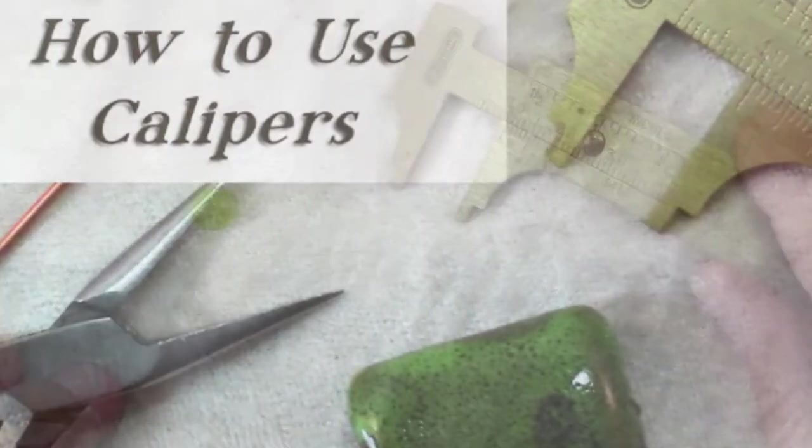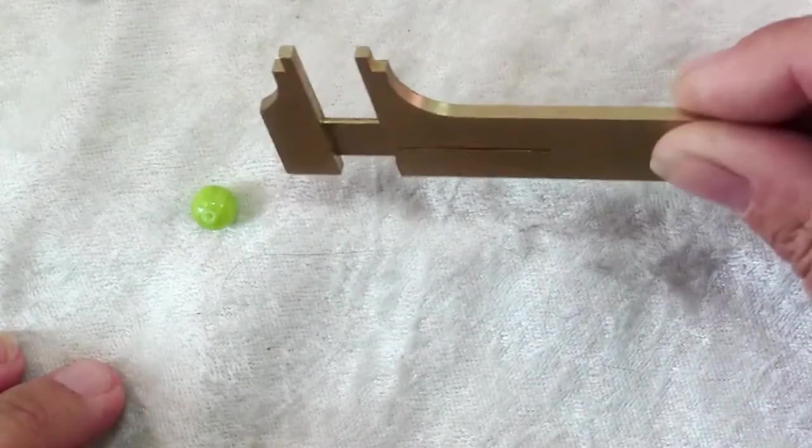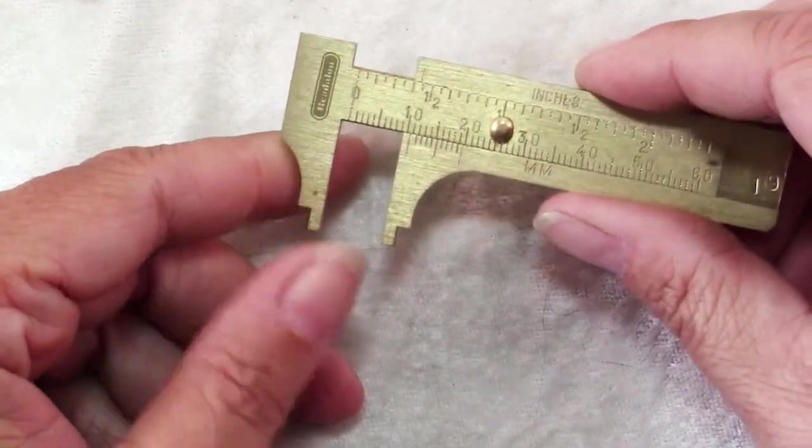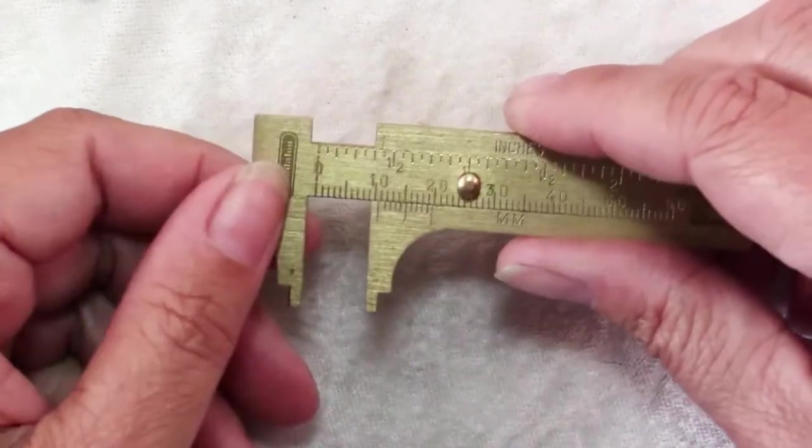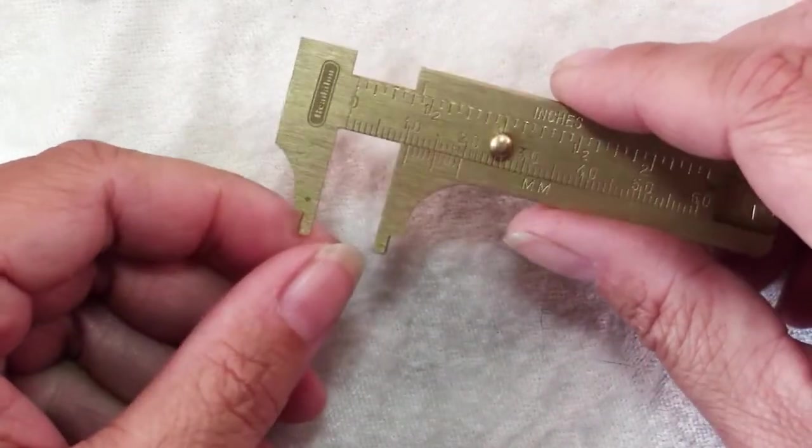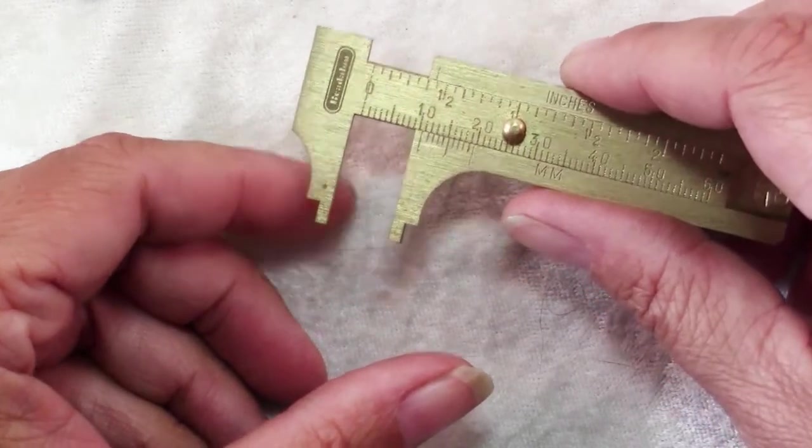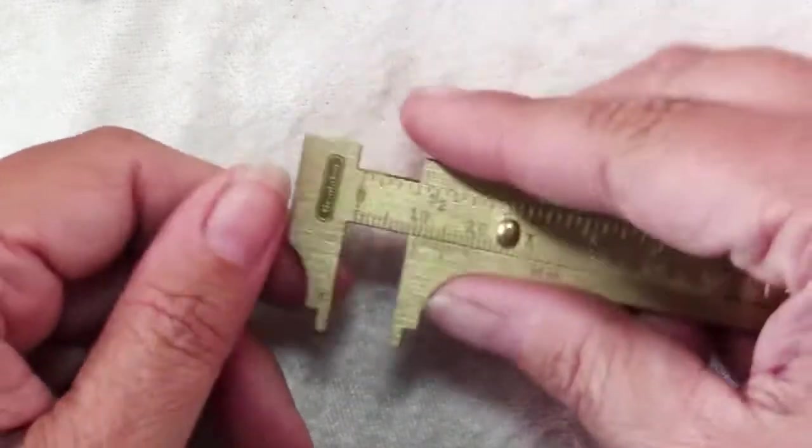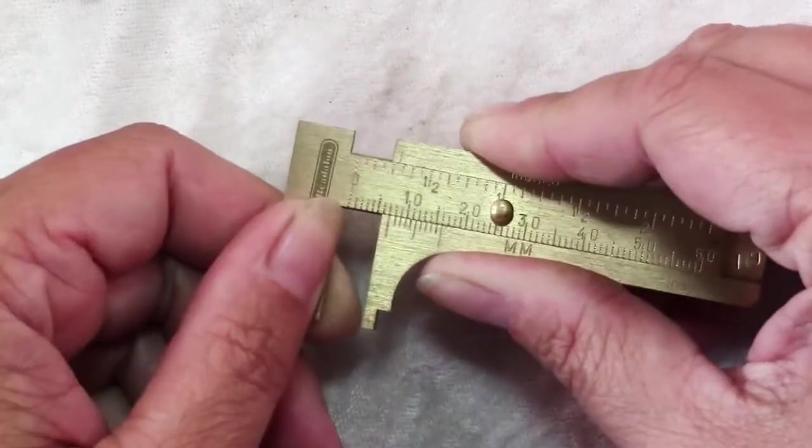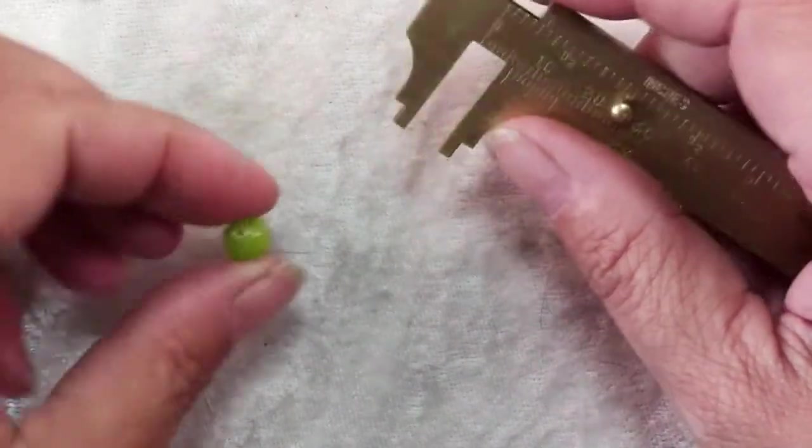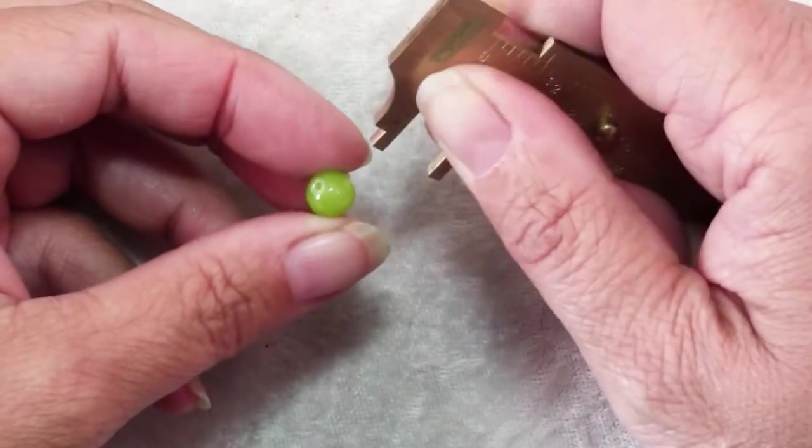This little brass caliper is used for measuring things, especially in small increments. You can find one at most jewelry and craft stores in the jewelry making aisle. It's a sliding caliper that's very useful for measuring jewelry making products such as beads.